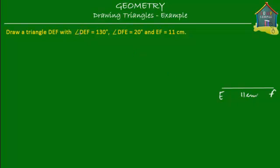Now angle DEF is equal to 130 degrees. 130 degrees is more than 90 degrees, so it's an obtuse triangle. Somewhere over here, and then angle DFE is equal to 20 degrees. So angle E is equal to 130 degrees and angle F is equal to 20 degrees.